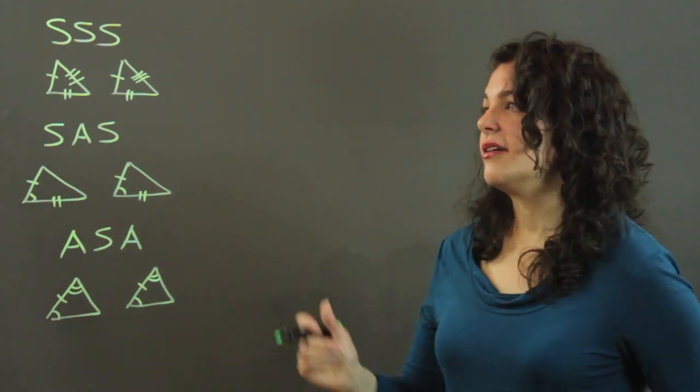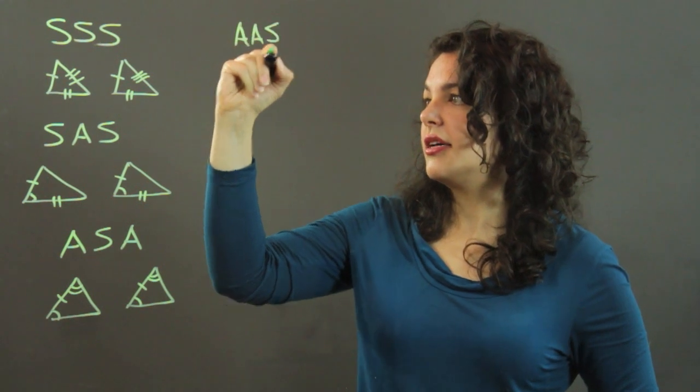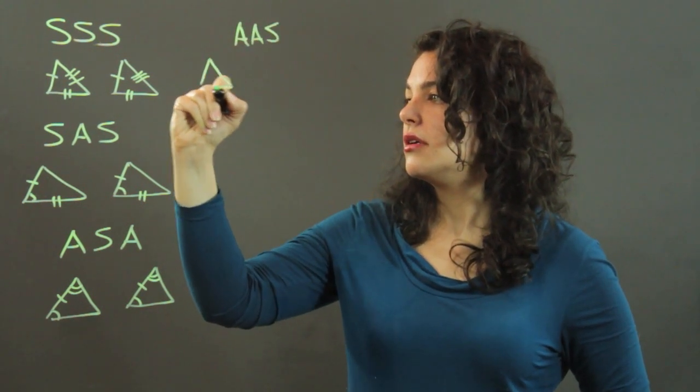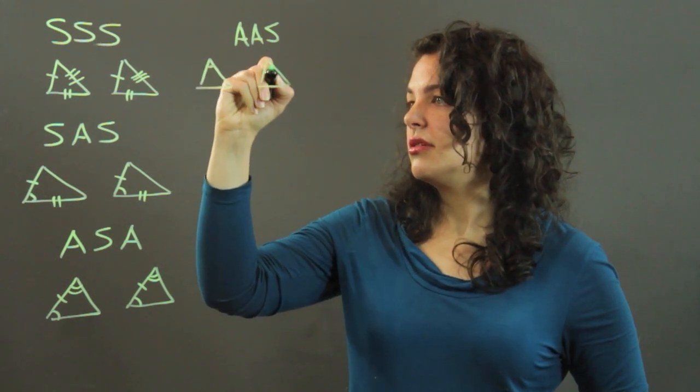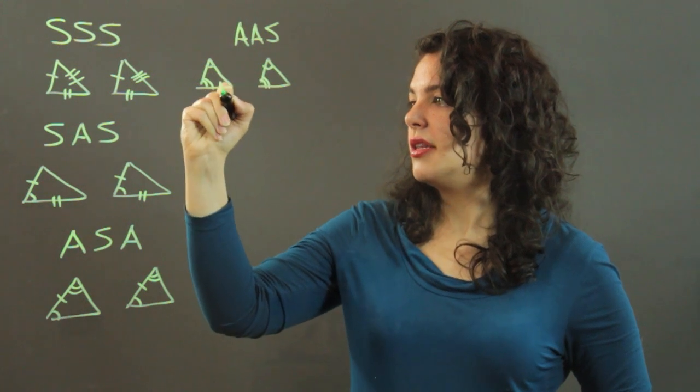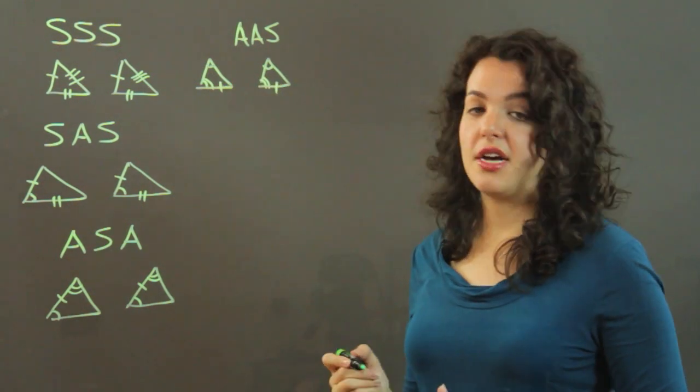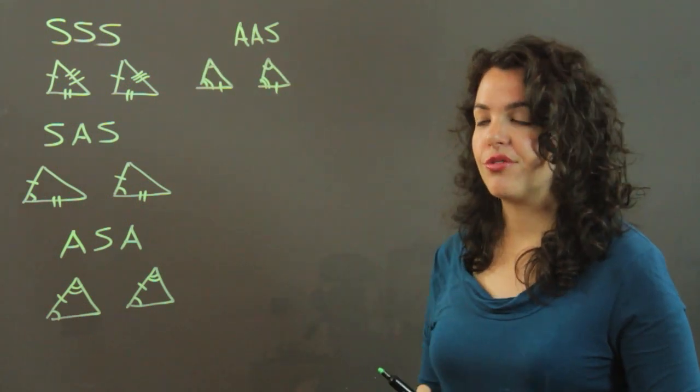Then I have angle-angle-side. So if I have an angle, another angle, and then a side, a non-included side, I have two congruent triangles.